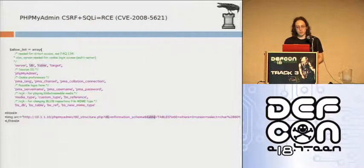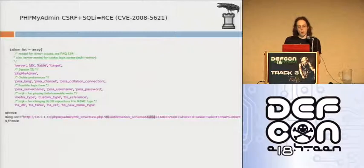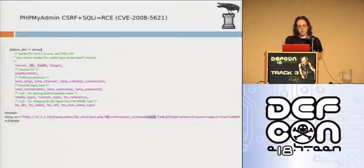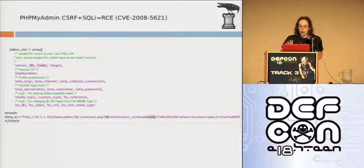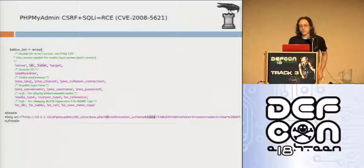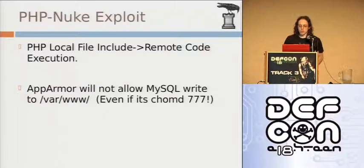I wrote an exploit against PHPMyAdmin - they did have very good CSRF protection for most variables. They did, however, have a whitelist where any variable name on this list could be sent from any domain - it was exempt from the CSRF token. In this case, DB and table were actually vulnerable to SQL injection. I couldn't just execute any query, but I was able to influence a query that was being built. DB has to be set to any database, in this case information_schema. And table fills off the query - doing a union select into outfile. Using local file include, we can gain remote code execution on a remote system. AppArmor will not allow us to write to /var/www.